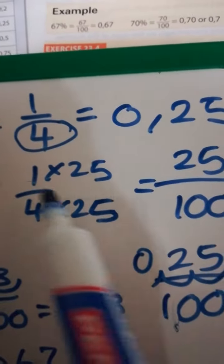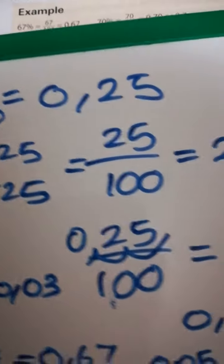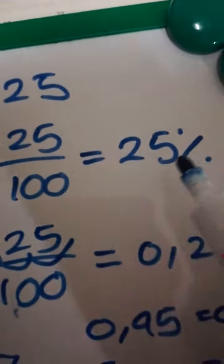So 4 times 25 equals 100, and 1 times 25 equals 25. This also means 25 percent.